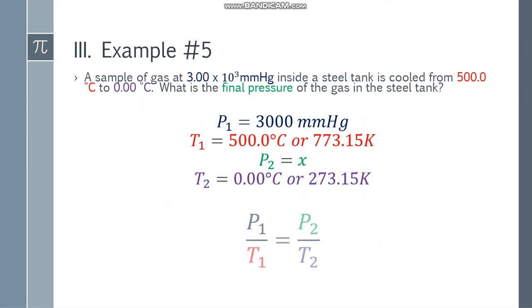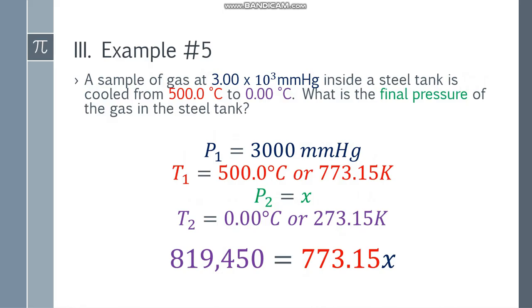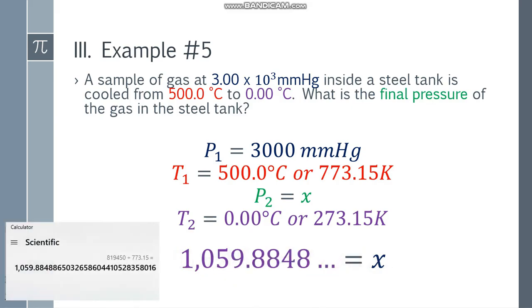Use the formula: P1 over T1 equals P2 over T2. Substitute the values: 3,000 over 773.15 equals x over 273.15. Cross multiply: 819,450 equals 773.15x. Divide both sides by 773.15 to get the value of x. So x equals 1059.8848 and so on.